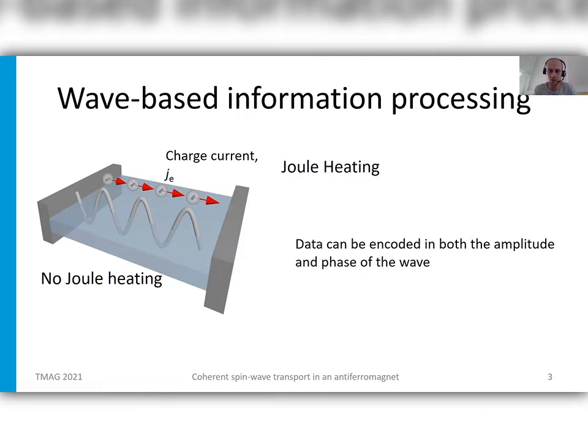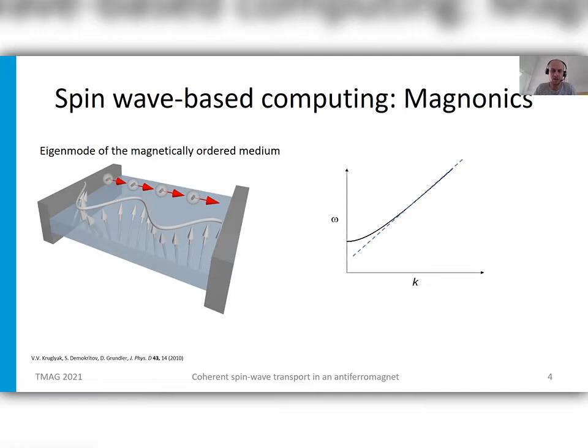Especially at this conference about magnetism, the quasi particle which attracts the most interest in this regard is the spin wave, the eigen mode of magnetically ordered media. All spin waves come with a certain dispersion relation, which is the frequency as a function of the wave number, and this is highly tunable and also allows for nanometer sized waves.